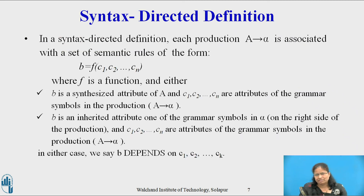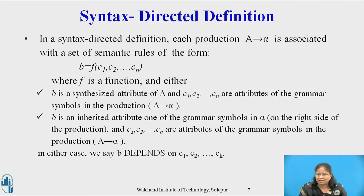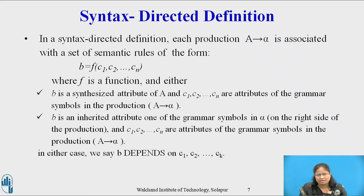In a Syntax Directed Definition, each production A derives alpha is associated with a set of semantic rules of the form b equals f(c1, c2, ..., cn), where f is a function and either b is a synthesized attribute of A, and c1, c2, ..., cn are the attributes of the grammar symbols in the production A derives alpha. In either case we say that b depends on c1, c2, ..., cn.